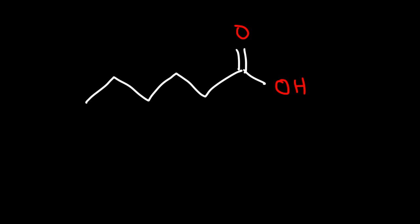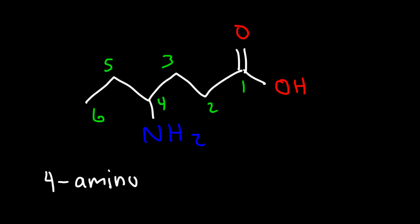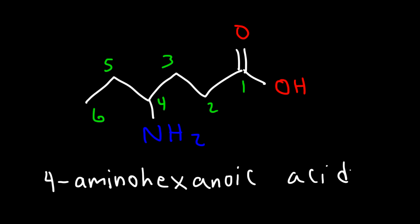For our next example, we're going to have a 6-carbon carboxylic acid molecule with an NH2 group attached to it. So what is the IUPAC name for this molecule? As always, we're going to start counting from the carboxylic acid. The NH2 group is on carbon 4. As a substituent, the NH2 group is called amino. So this is going to be 4-amino, and since we have 6 carbons in the parent chain — hexane — but with the carboxylic acid functional group, it's going to be called hexanoic acid. And so that's the name 4-aminohexanoic acid.